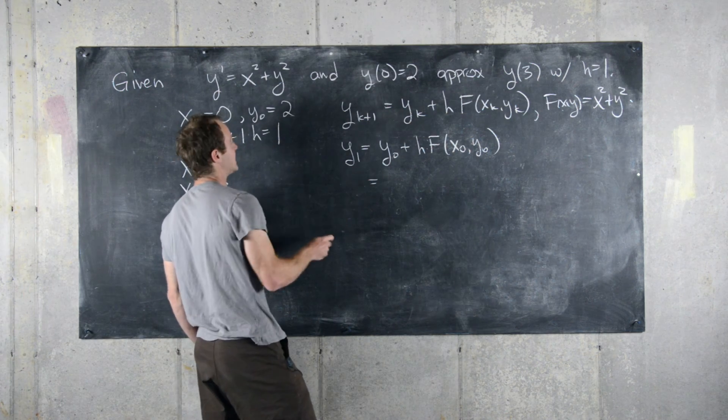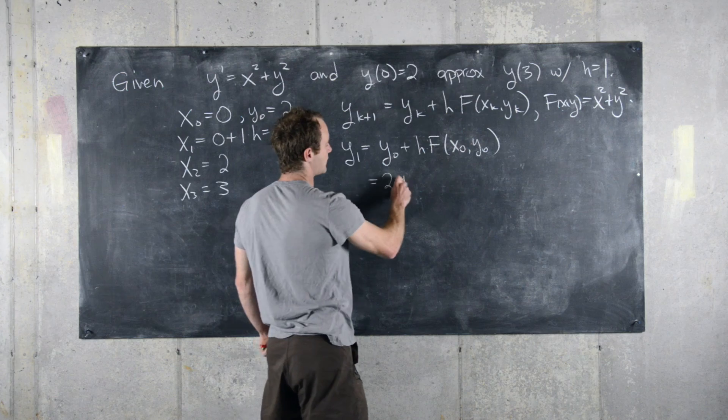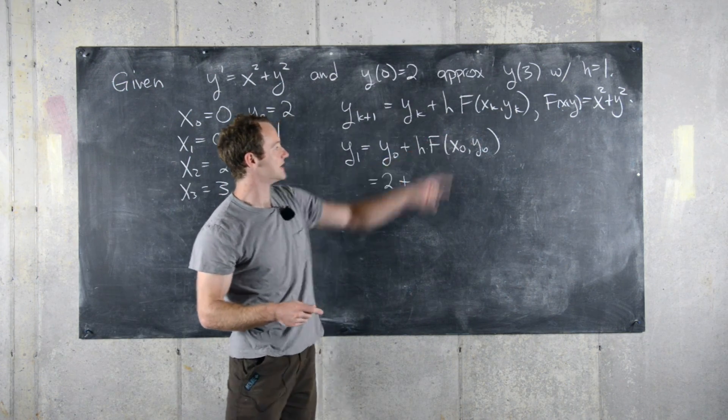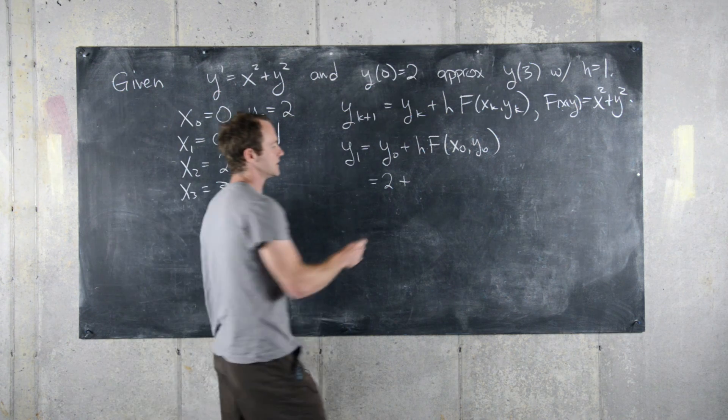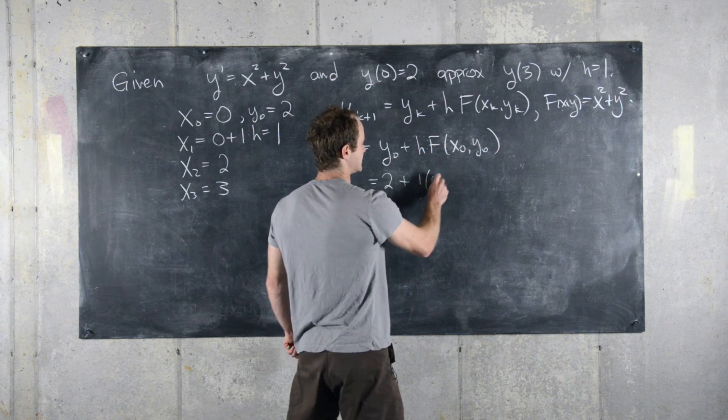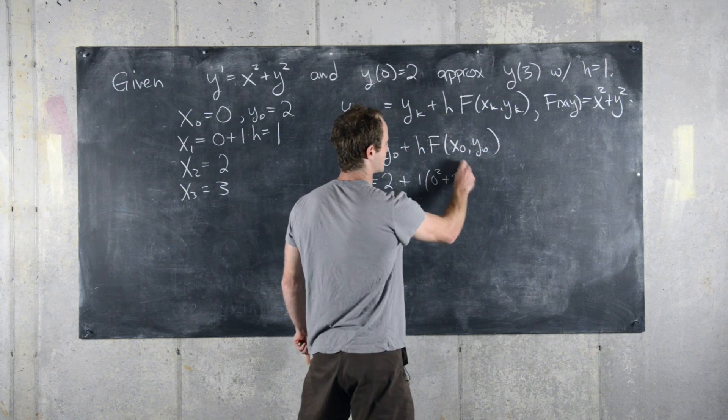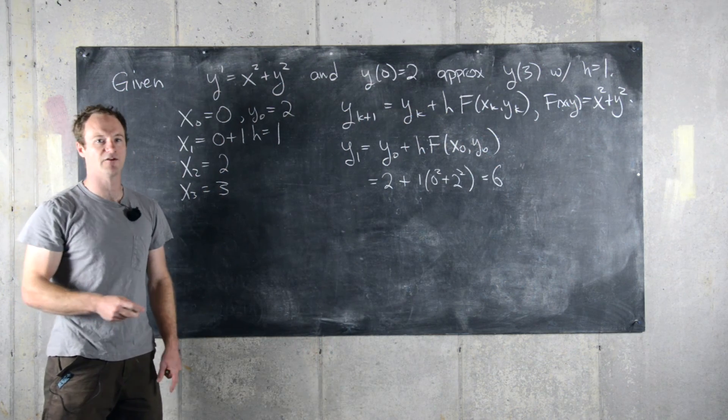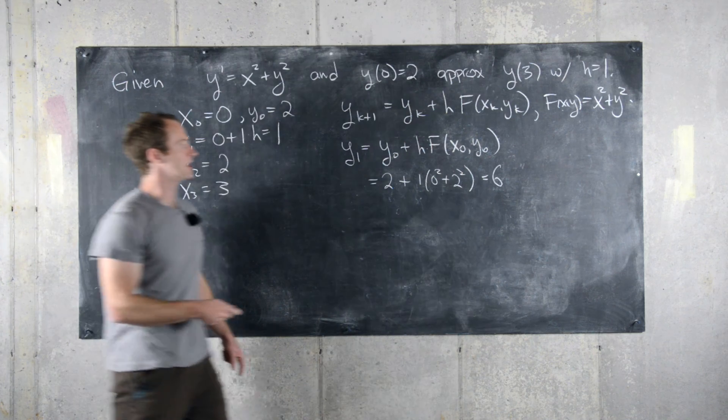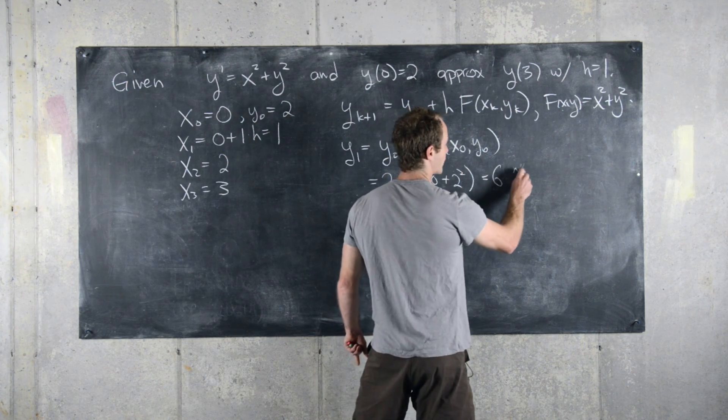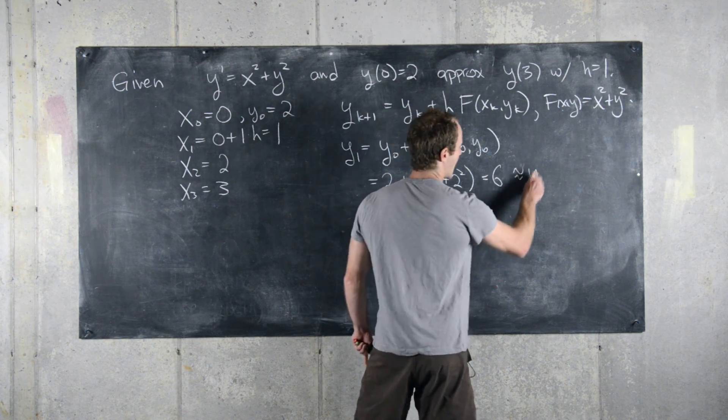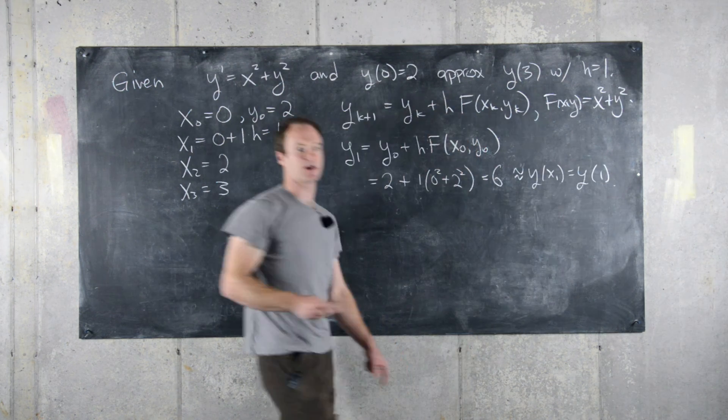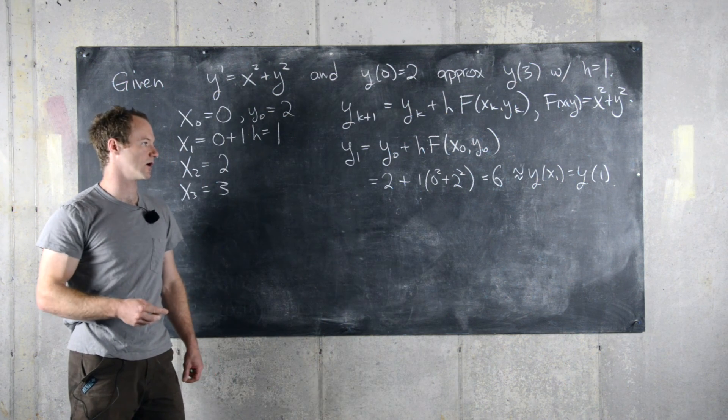So from here we can say that this is two plus our step size, which we're taking to be one, and then our function f is x squared plus y squared, so this is plus one times zero squared plus two squared, so this is six. So y of one equals six, and let's recall that this is approximating y evaluated at x of one, which in this case, because of our step size and our initial condition, this is y of one.